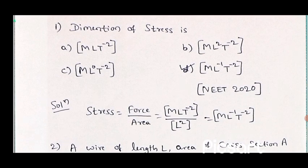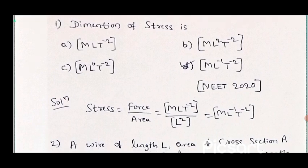So the correct answer is the fourth option: ML to the power minus 1 T to the power minus 2.